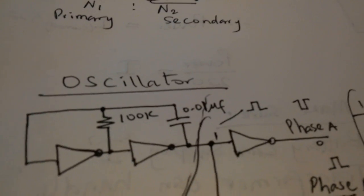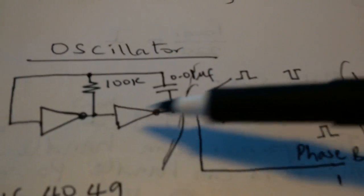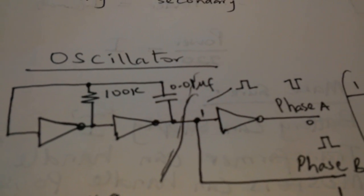Okay so let's look at the oscillator. For this oscillator we're using 4049. It has six inverters inside. It's called hex inverter. So one, two, three and the other three are used for other things.